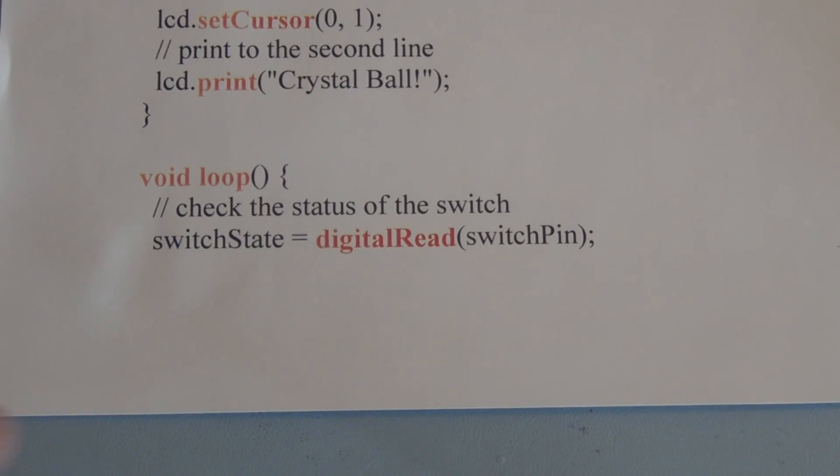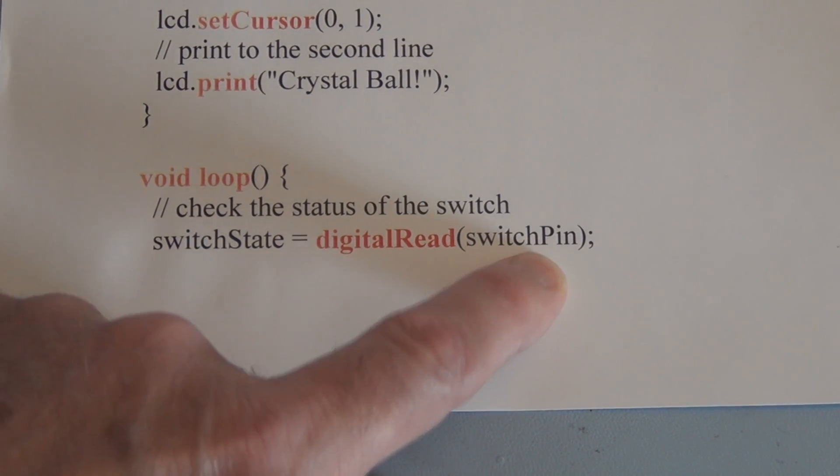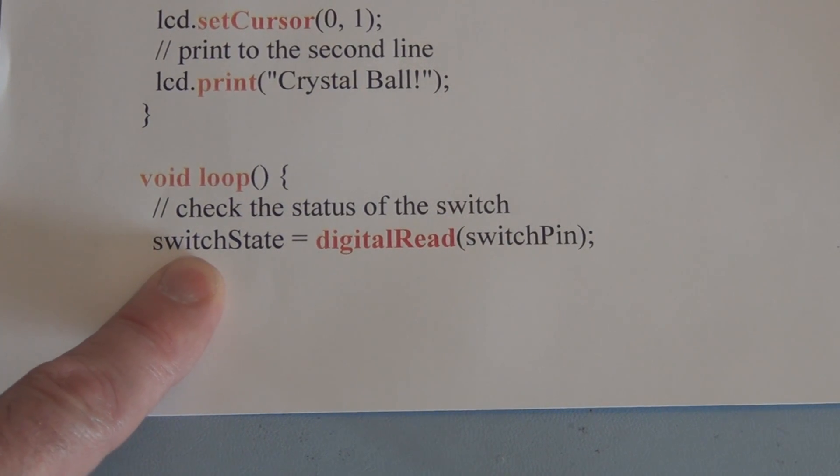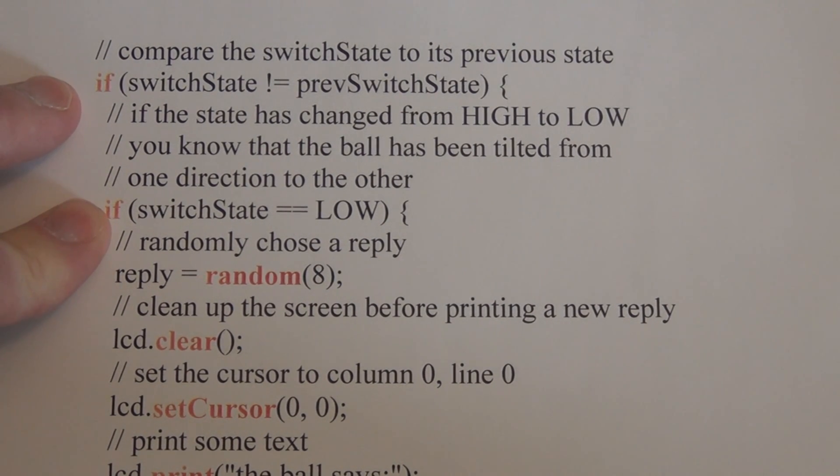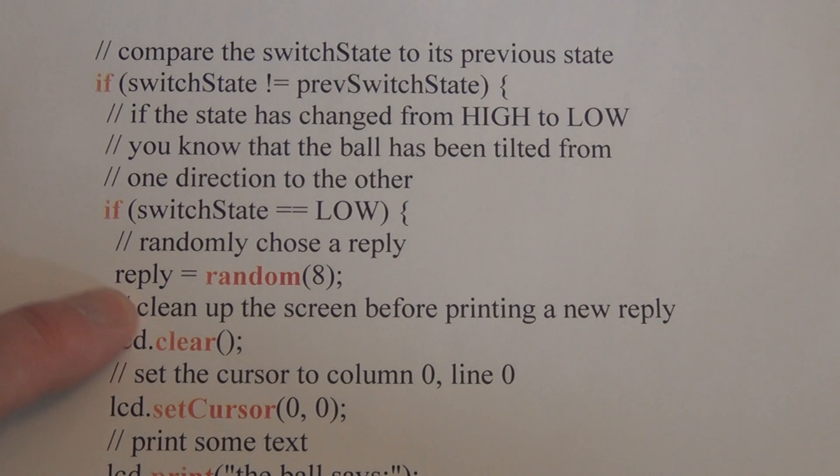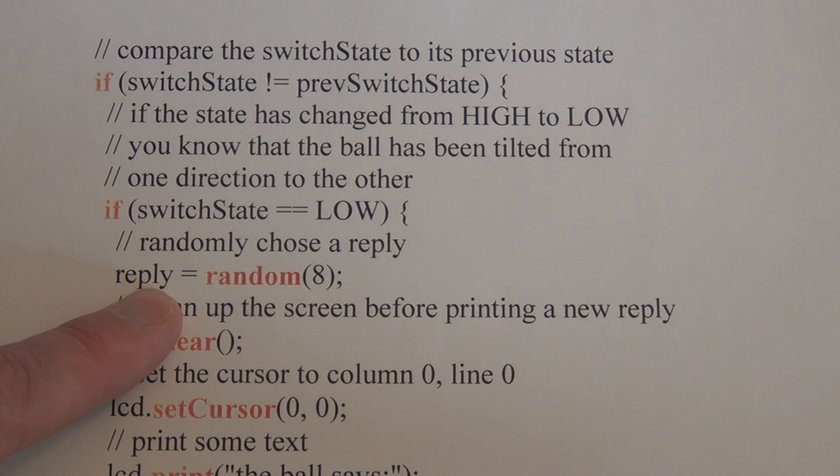Next, we start a loop function where we're going to do a digital read of pin 6. Recall pin 6 is switchPin and we'll store that in switchState. And here we check to see whether the previous switch state is different than the current switch state. And if they are, and if the switch state is low, then we're going to use this random function, random 8. This will return a random number between zero and seven and store it in the variable reply. And that's the number we're going to use to determine what random statement to display on the LCD.